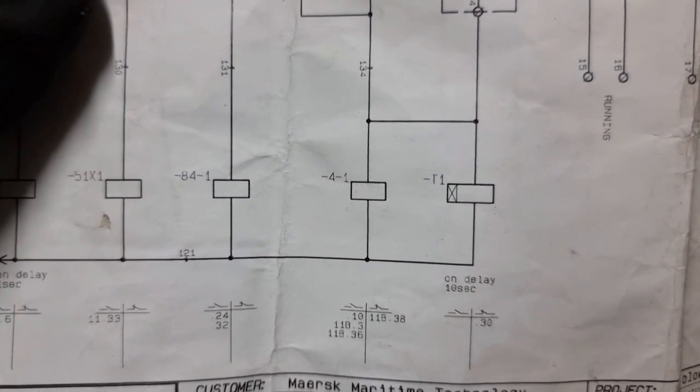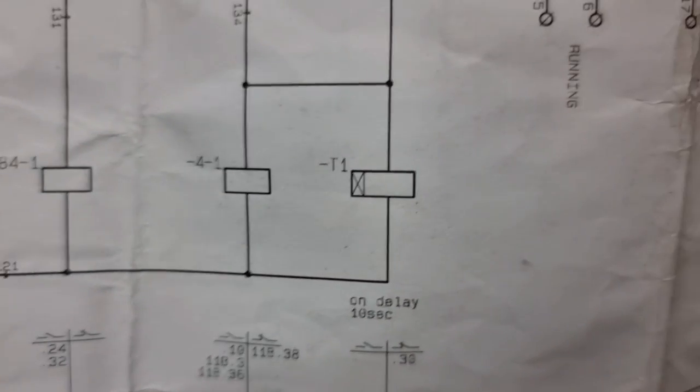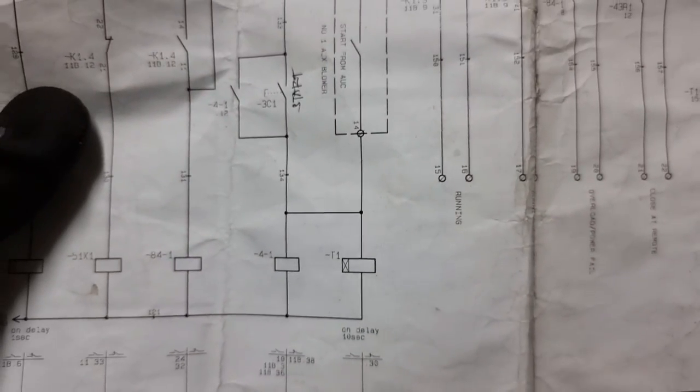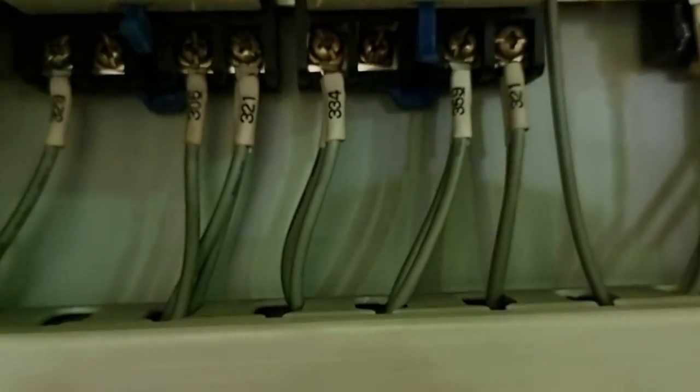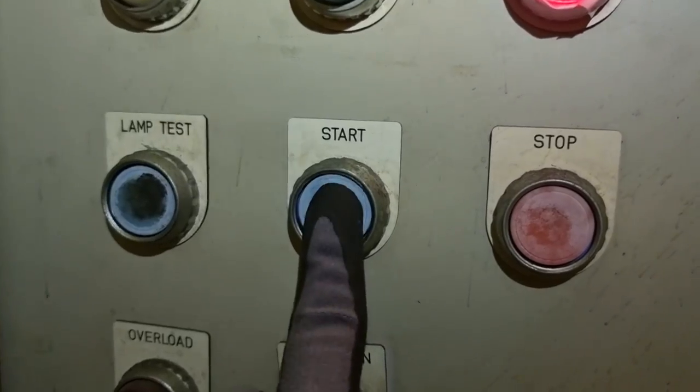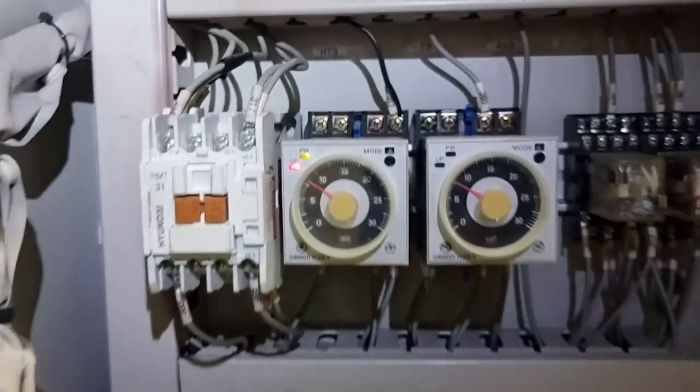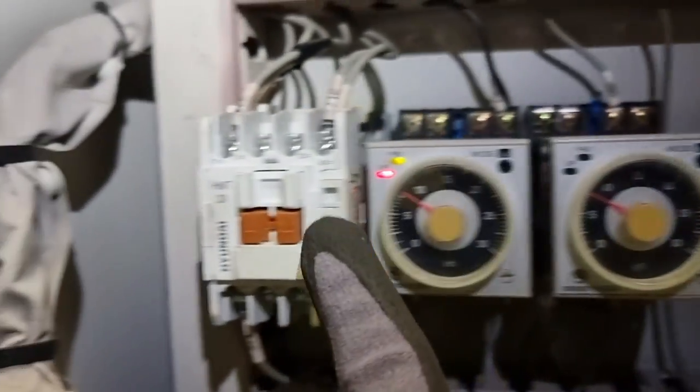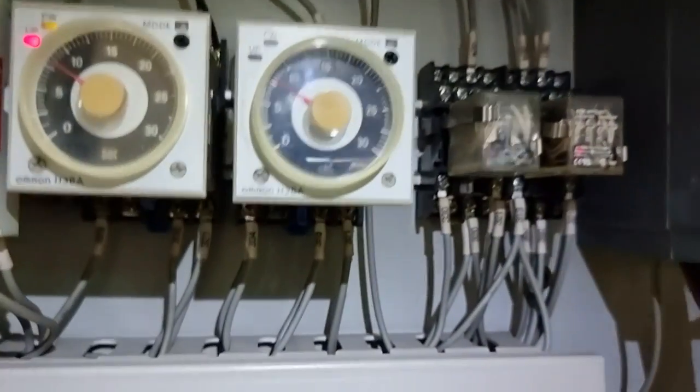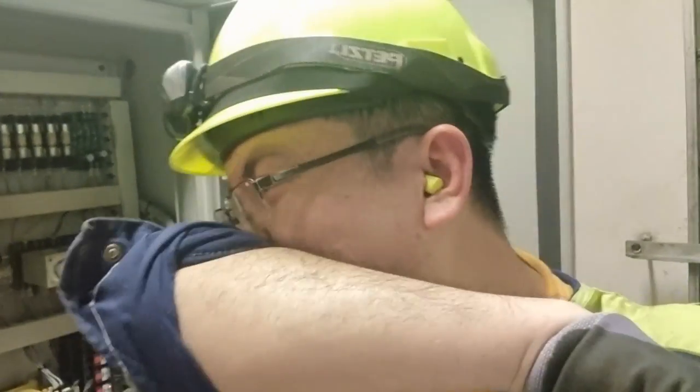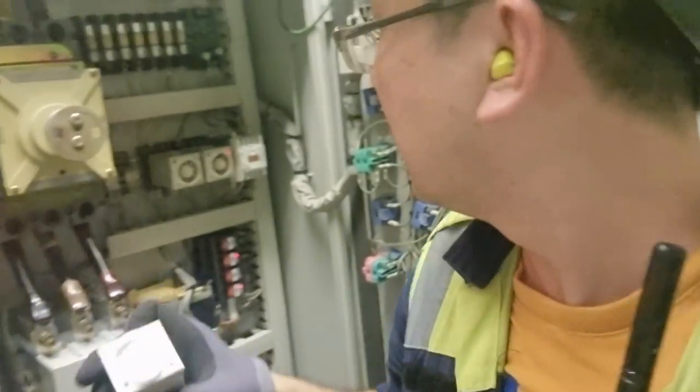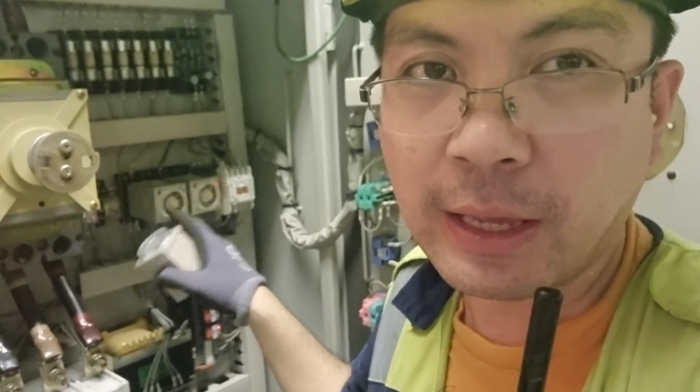That only means that our control system is in good condition. We just need to test the 4-1 and the timer on delay, which is set to 10 seconds, if they will be activated once we press the start button. But after pressing the start button, the timer T1 is not actually activating. Hence, we need to check terminal 334 and 321 if we are having 28 volts. I found out that we're having 28 volts DC every time we press the start button. The main function of timer T1 is to give a 10-second on delay before the BFD will start. After investigation, I found out that this timer is defective, so we're going to replace it with a brand new one.